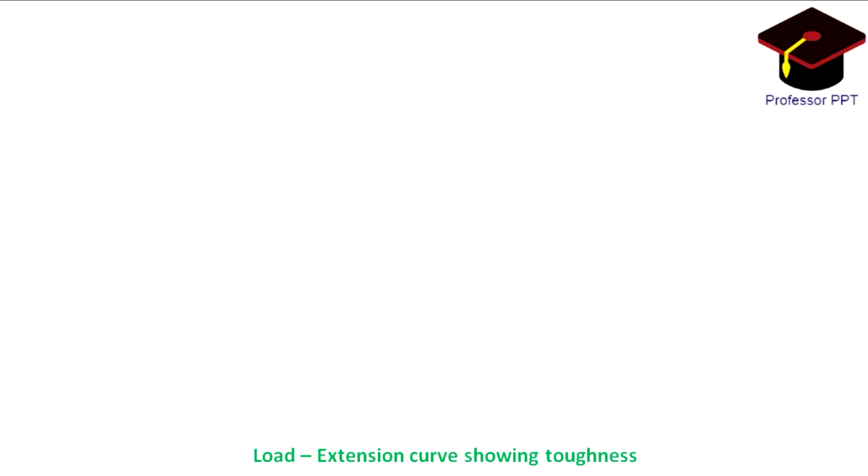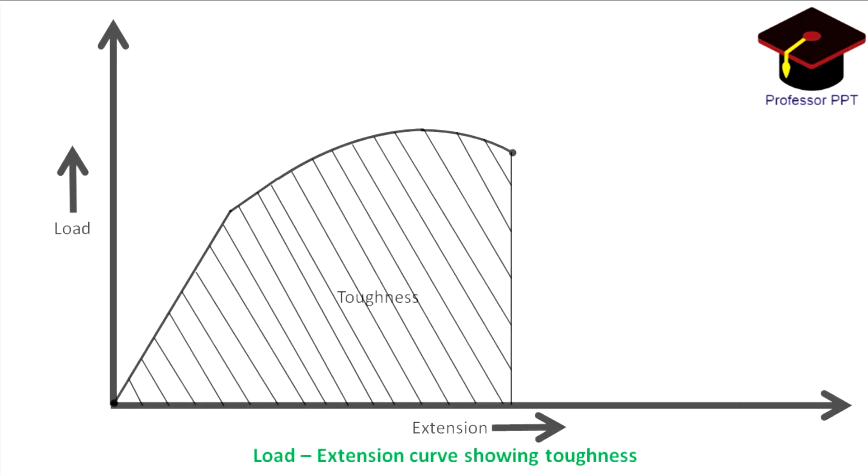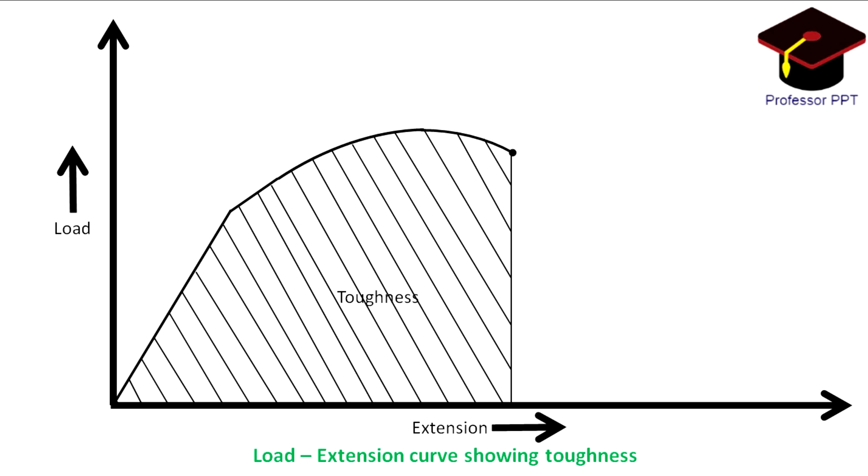Toughness: It is the total energy absorbed by the material prior to its fracture. This energy is the sum of elastic energy and plastic energy. It is the total area under the load-extension curve.